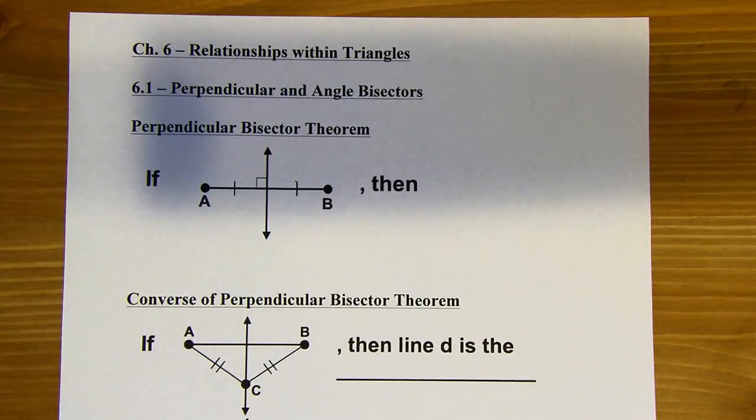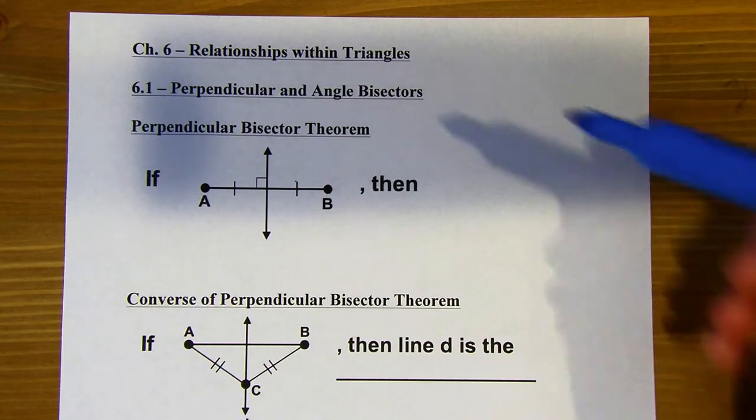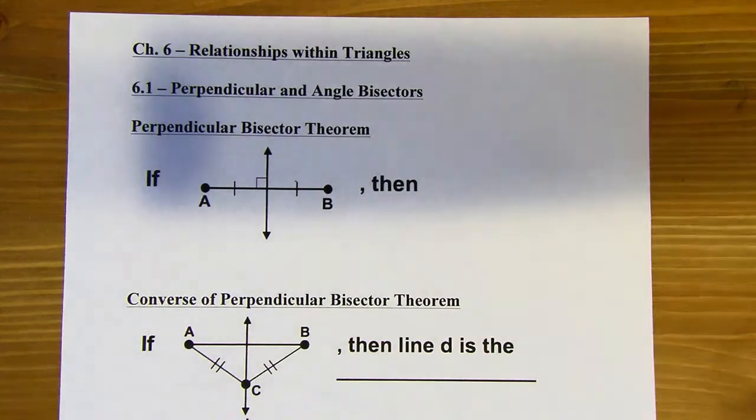Chapter 6 is called Relationships Within Triangles, and section 6.1 is Perpendicular and Angle Bisectors.